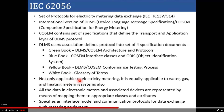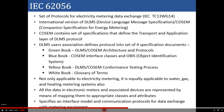DLMS COSEM is not only applicable to electricity metering — it is equally applicable to water, gas, and heating metering systems as well. All data in electronic meters and associated devices are represented by mapping them to appropriate classes and attributes. Whatever data is captured from sensors in the smart meter is mapped appropriately to various classes and their corresponding attributes. It specifies an interface model and communication protocols for data exchange with metering equipment.